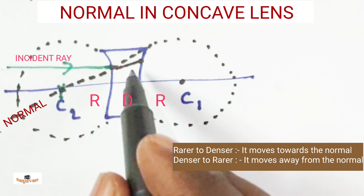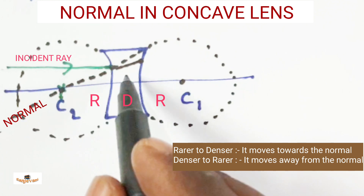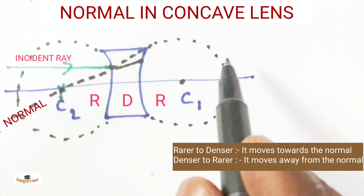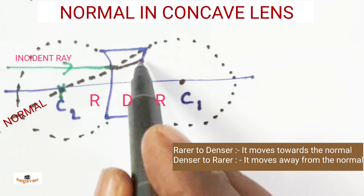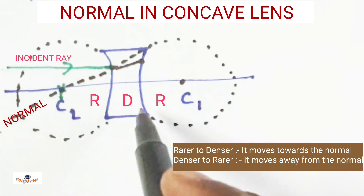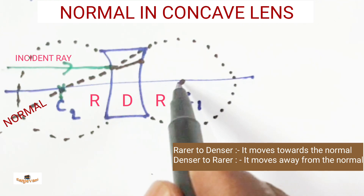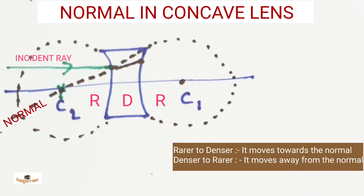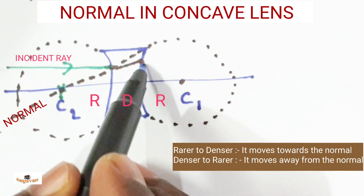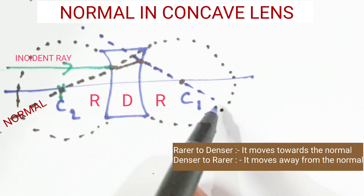The light ray is now in the lens. It needs to move from this denser medium to rarer medium. For that, we need to decide the direction of the light by drawing a normal for this point of incidence. This curved portion is made up of a sphere, and its center of curvature is here. Let me draw a normal to this point — it is the normal for this point.